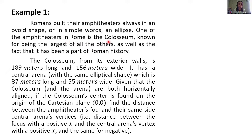One of the amphitheaters in Rome is the Colosseum, known for being the largest of all the others, as well as the fact that it has been a part of Roman history. The Colosseum from its exterior walls is 189 meters long and 156 meters wide. It has a central arena with the same elliptical shape, which is 87 meters long and 55 meters wide. Given that the Colosseum and the arena are both horizontally aligned, if the Colosseum center is found on the origin of the Cartesian plane with coordinates 0,0, find the distance between the amphitheater's foci and their same side central arena's vertices — the distance between the focus with a positive x and the central arena's vertex with a positive x, and the same for negative.